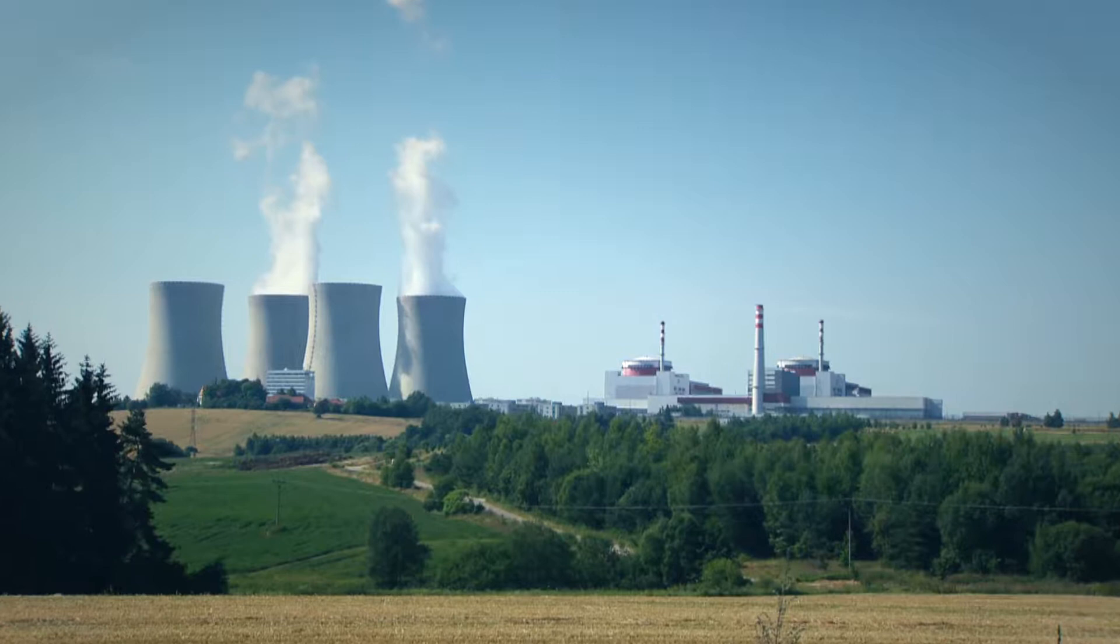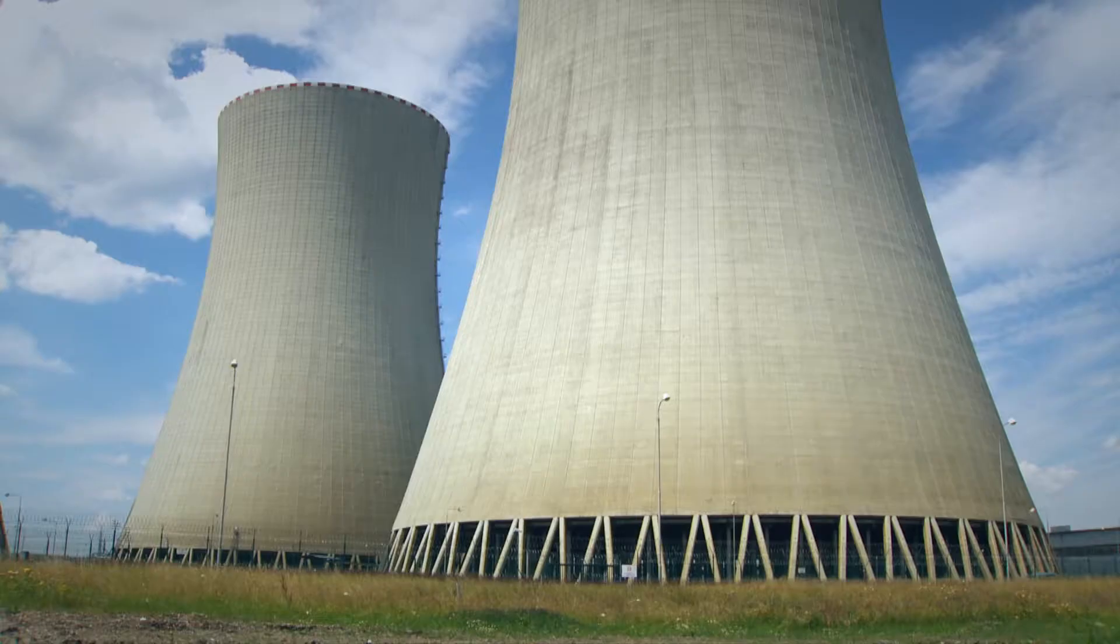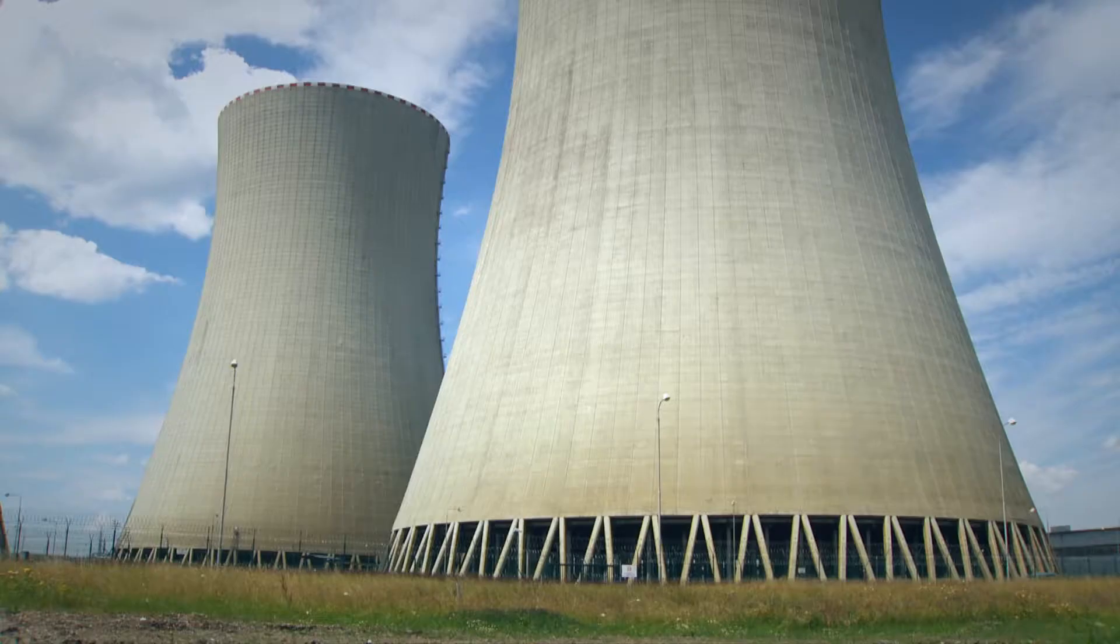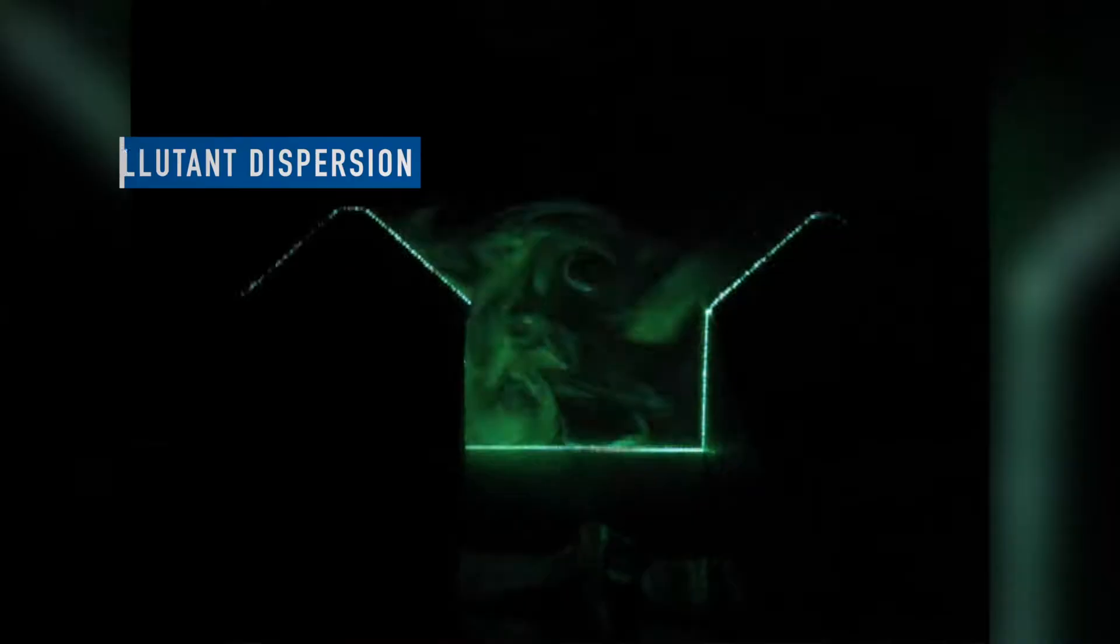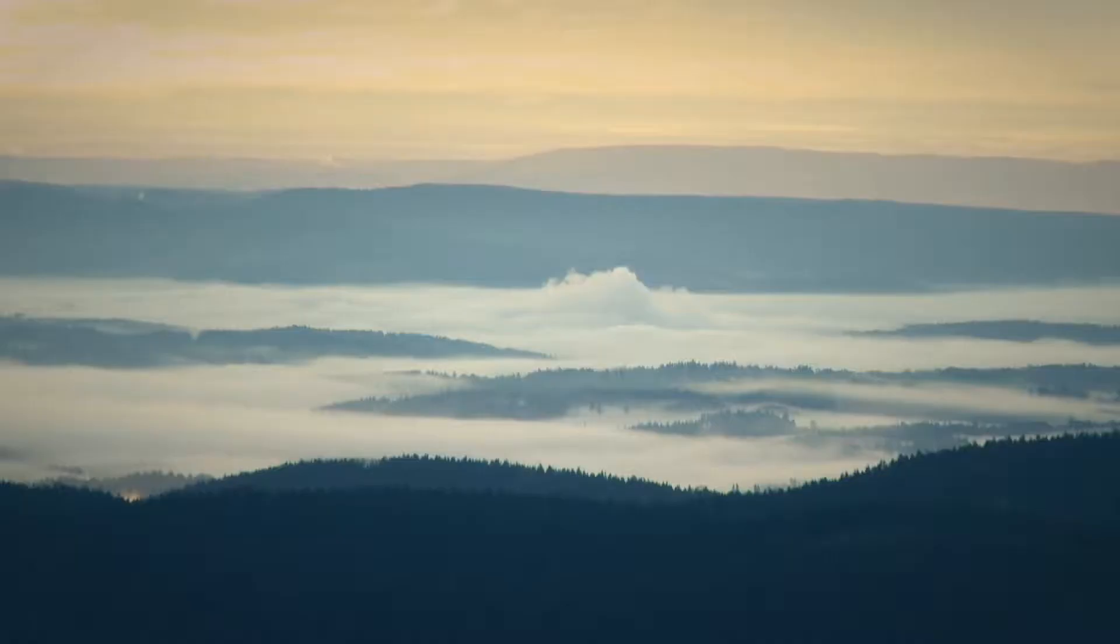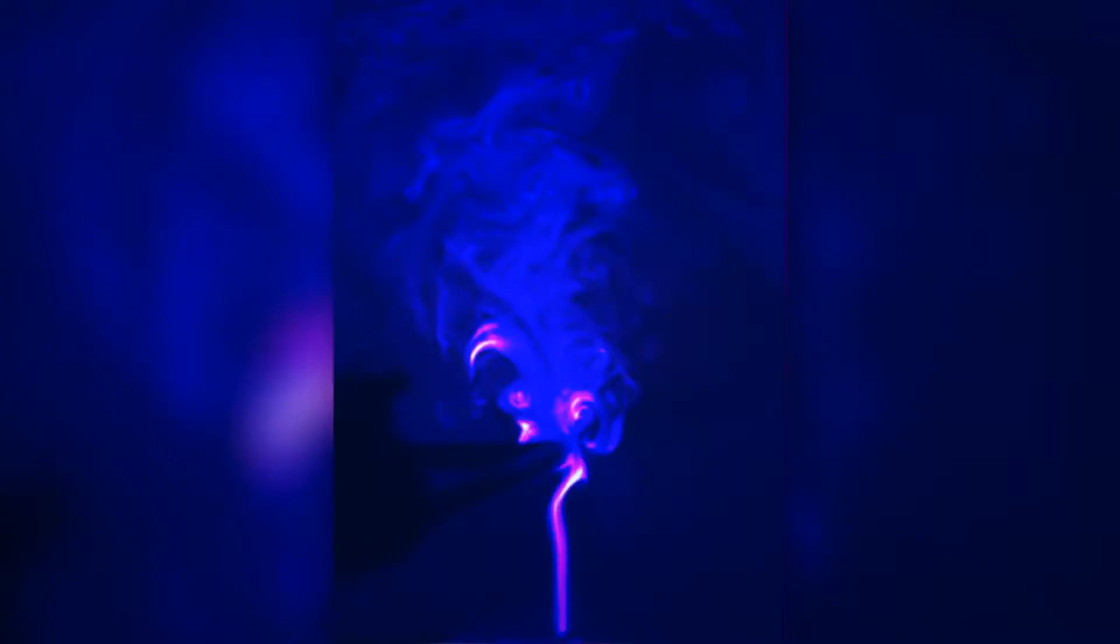Our research leads to optimization of machine geometry and flow control. Our work helps to improve the efficiency of turbines in power plants and achieve savings in power generation. We also help to predict the flow and dispersion of pollutants in cities or in the countryside.